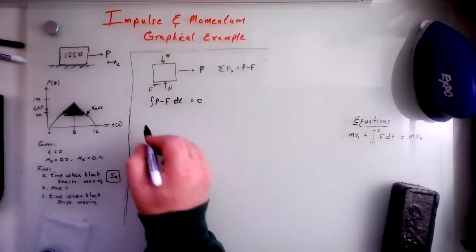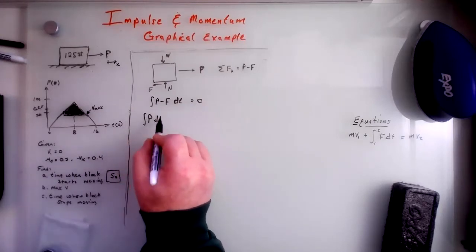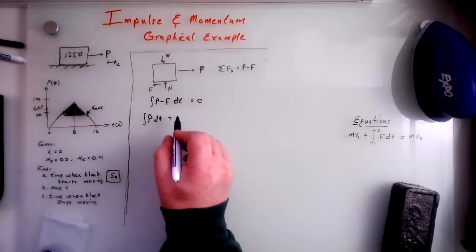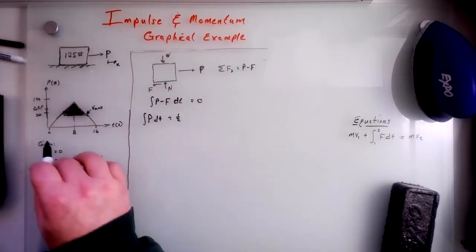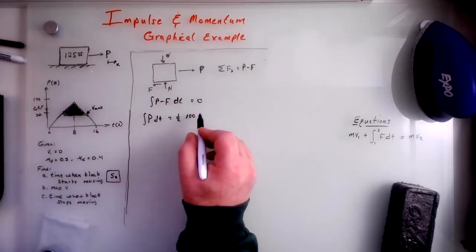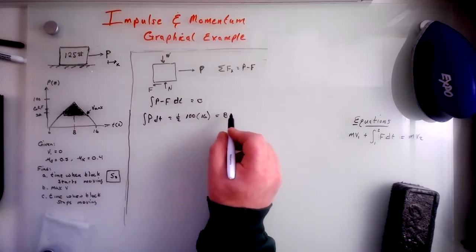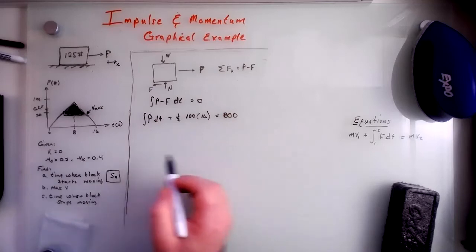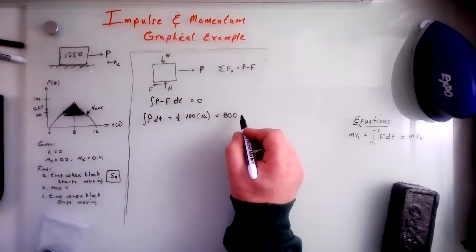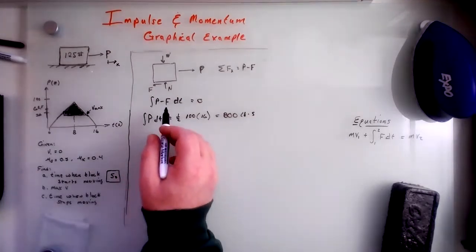Right. So what is P? P, and I guess mathematically rigorous here, is the whole thing. So where's that? That is one half of 100 times 16. So that's what? 800. And what are the units? That's pounds times seconds.